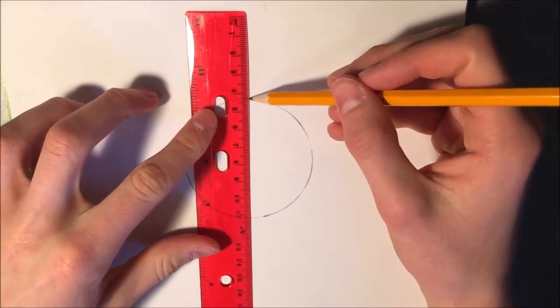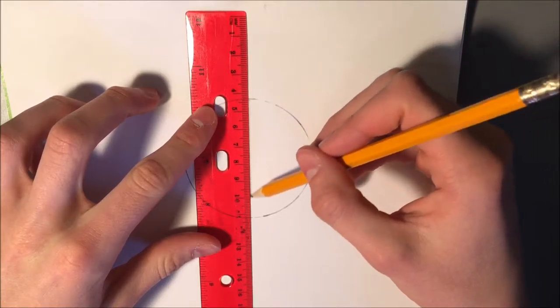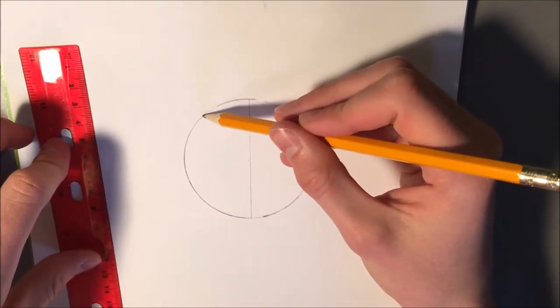Now that you've done that, draw one straight line down the middle, followed by two curved lines on either side.